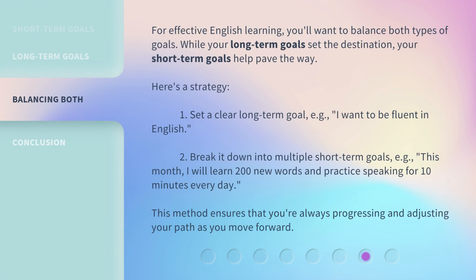For effective English learning, you'll want to balance both types of goals. While your long-term goals set the destination, your short-term goals help pave the way. Here's a strategy: 1. Set a clear long-term goal — e.g., I want to be fluent in English. 2. Break it down into multiple short-term goals — e.g., this month, I will learn 200 new words and practice speaking for 10 minutes every day. This method ensures that you're always progressing and adjusting your path as you move forward.